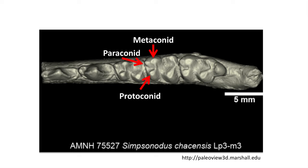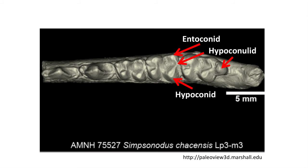Note that the names of the cusps end with 'conid' rather than 'cone' to denote that they are in the lower teeth. A number of cusp names ring the posterior basin, which are different than in the upper teeth. These, going clockwise, are the entaconid, hypoconilid, and hypoconid. You can see how in the last molar the hypoconilid is rather large compared to the second or middle molar in this particular jaw.